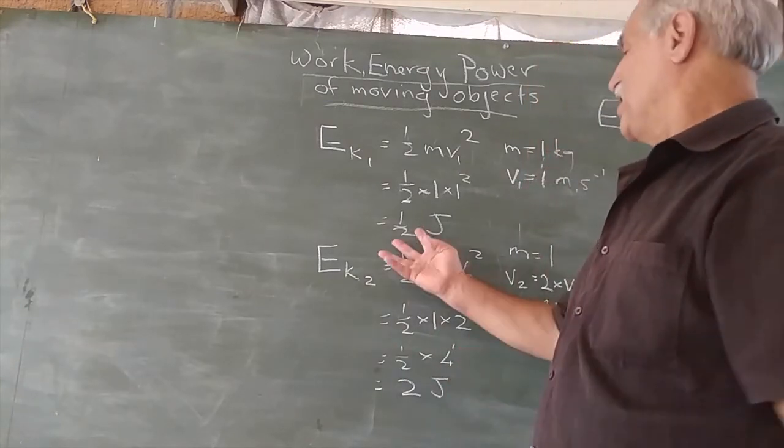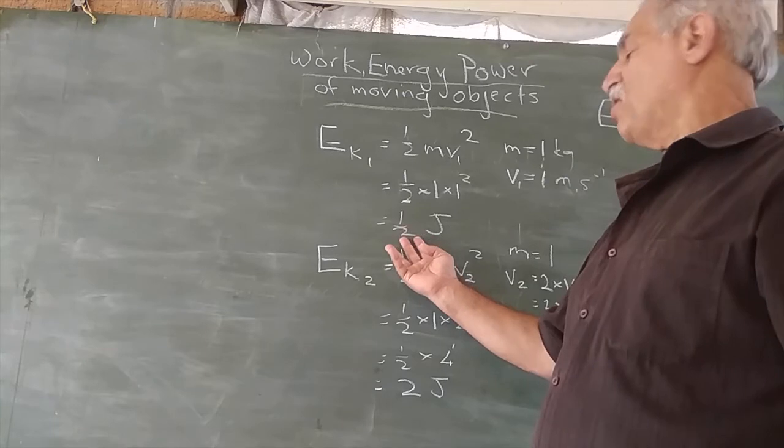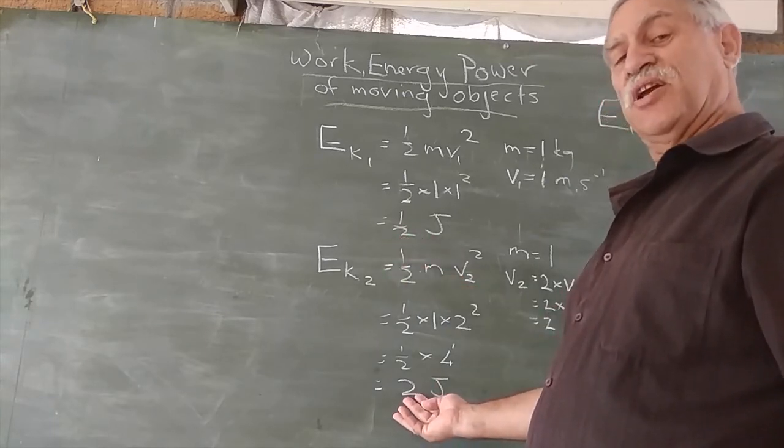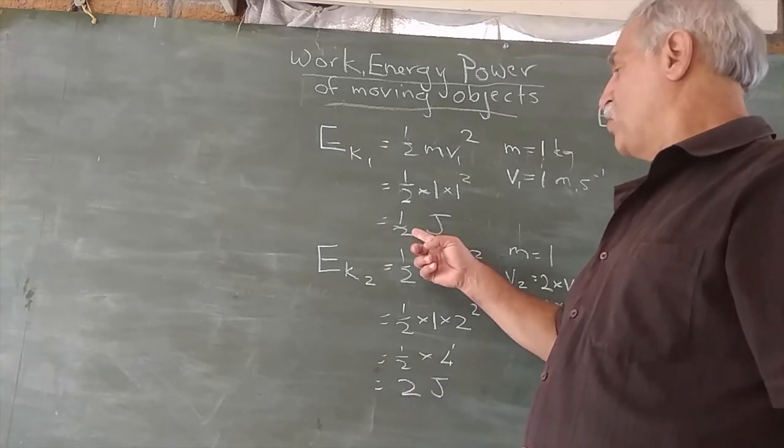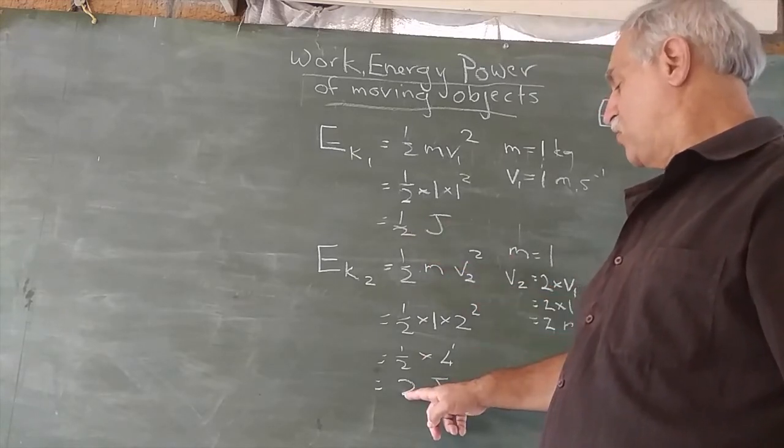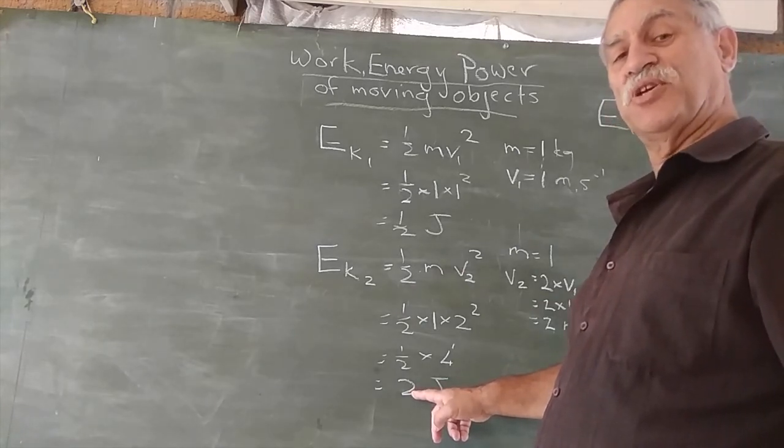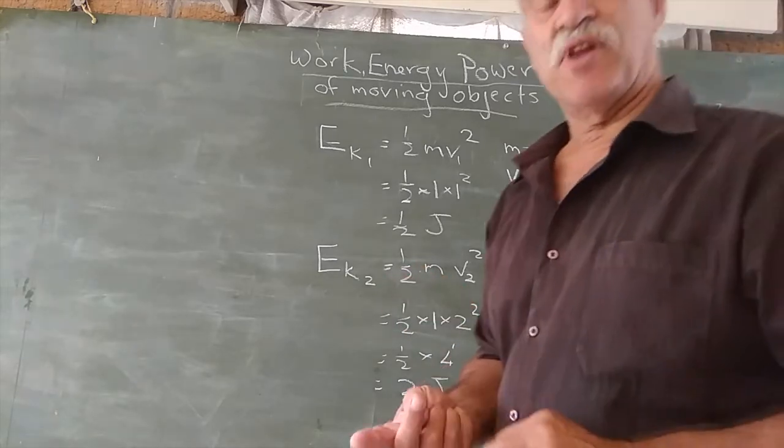Have a look at that. We originally had 1/2 joule, but when we double the velocity, we actually have 4 times as much energy—4 halves equals 2—in an object traveling at twice the speed. Do you see that?